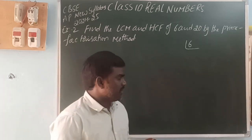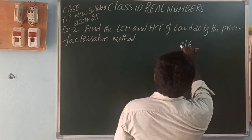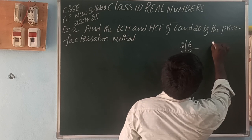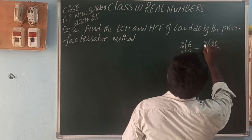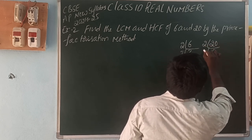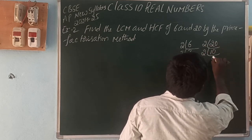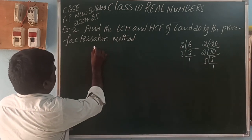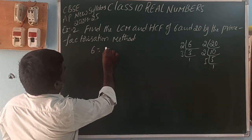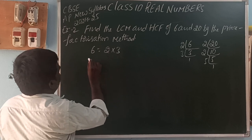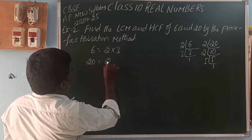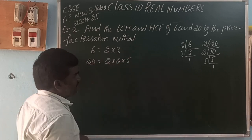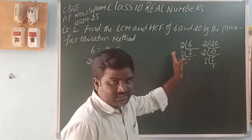For 6, divide by 2 to get 3, then 3 gives 1. So 6 = 2 into 3. For 20, divide by 2 to get 10, then 2 to get 5, then 5 gives 1. So 20 = 2 into 2 into 5. These are their prime factorizations — the product of prime factors.